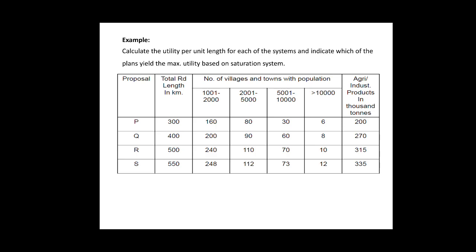For proposal P the number of villages or towns with population greater than 10000 is 6, for Q it is 8, for R it is 10, and for S it is 12. On the same proposed roads, the agricultural or industrial products in 1000 tons are: 200 for proposal P, 270 for proposal Q, 315 for proposal R, and 335 for proposal S.